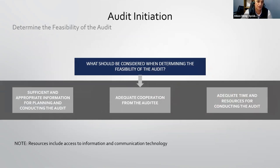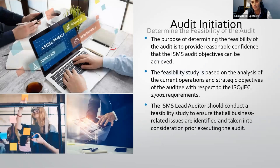During audit initiation you need to determine the feasibility of the audit. This requires sufficient and appropriate information for planning and conducting the audit, adequate cooperation from the auditee, and adequate time and resources including access to information and communication technology. The purpose is to provide reasonable confidence that the ISMS audit objectives can be achieved. The feasibility study is based on analysis of the current operations and strategic objectives with respect to ISO 27001 requirements.